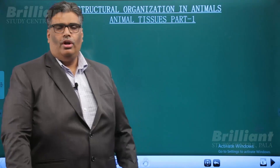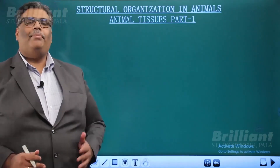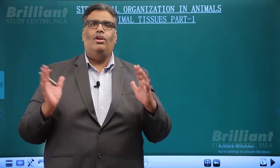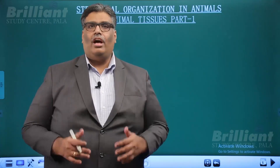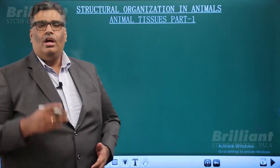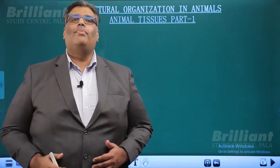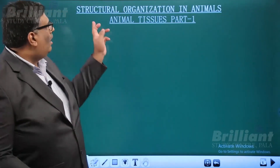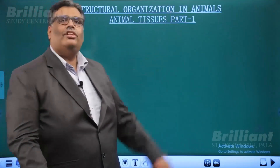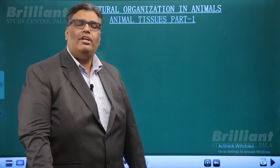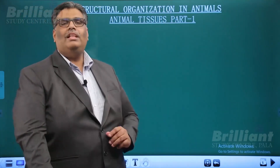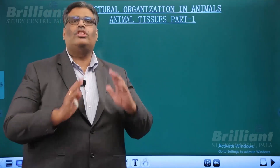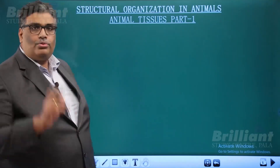We call this chapter 'Structural Organization in Animals.' Structural organization refers to how an animal is organized — what the organization of its body is. In this particular chapter, we are dealing with two subtopics.